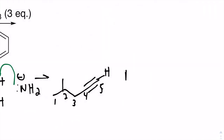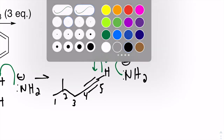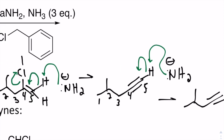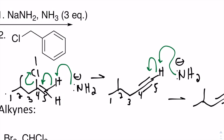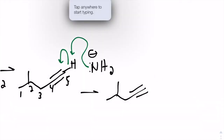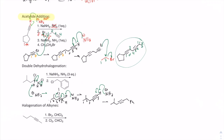The third equivalent removes the terminal proton from that alkyne and generates the acetylide anion. In step two, there is another alkyl halide — a benzyl bromide — so we extend the carbon chain by one carbon and a phenyl group. This demonstrates how we can prepare acetylide anions from disubstituted alkyl halides and extend the carbon chain, just like the reaction above.